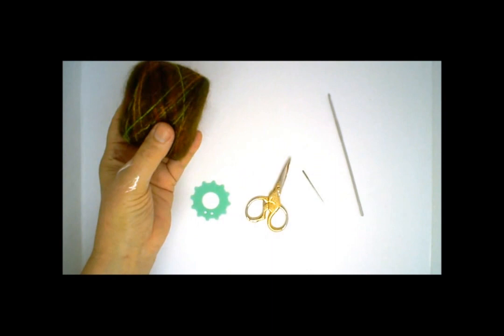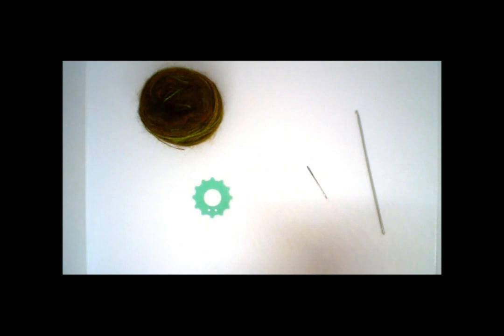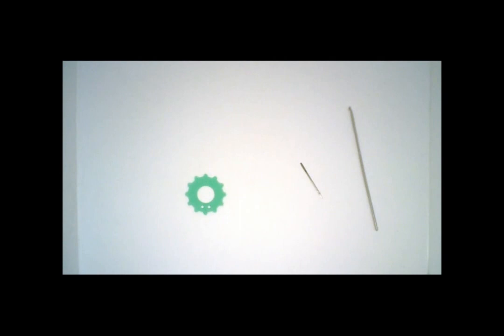So I've started off. I've got my yarn, I've got my daisy wheel, I've got my scissors, a big eye needle, and a little crochet hook. I've already cut a length of yarn that I can start with and show you.